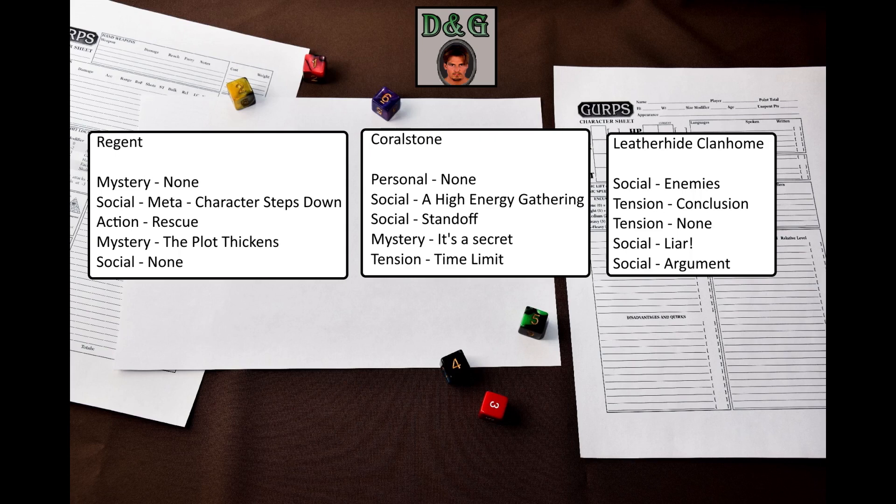Let's roll up a turning point for the Coralstone clan: Personal — None. Social — A high energy gathering. Social — Standoff. Mystery — It's a secret. Tension — Time limit. Let's roll up a turning point for visiting the Leatherhide clan home: Social — Enemies. Tension — Conclusion. Tension — None. Social — Liar. Social — Argument.